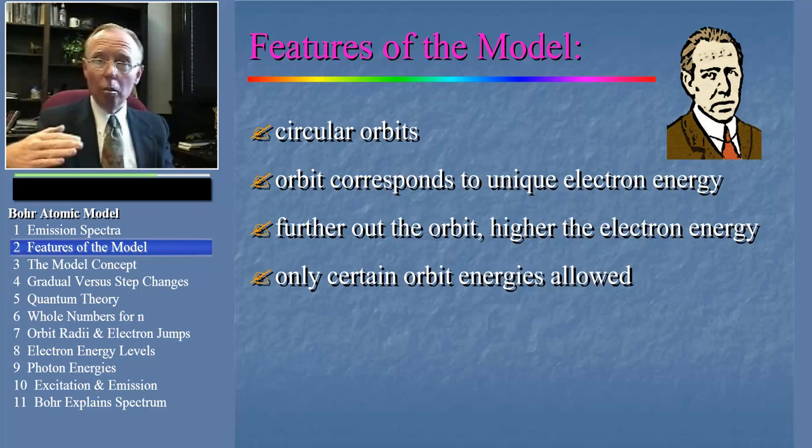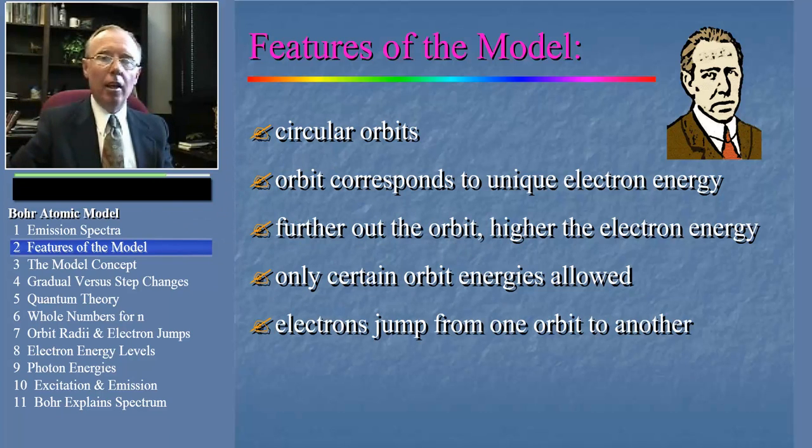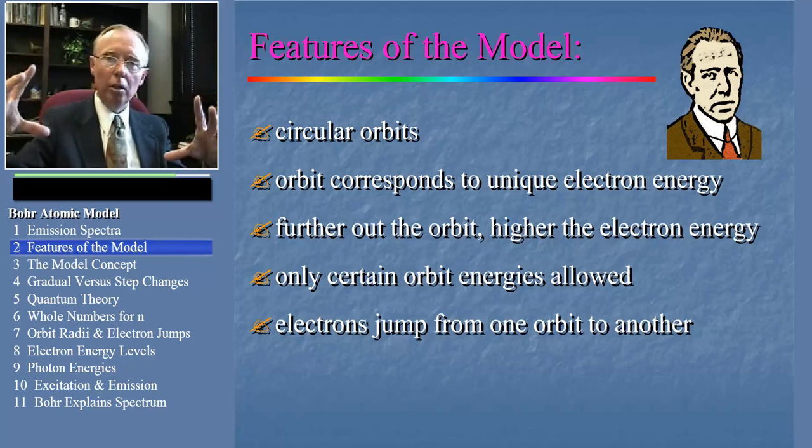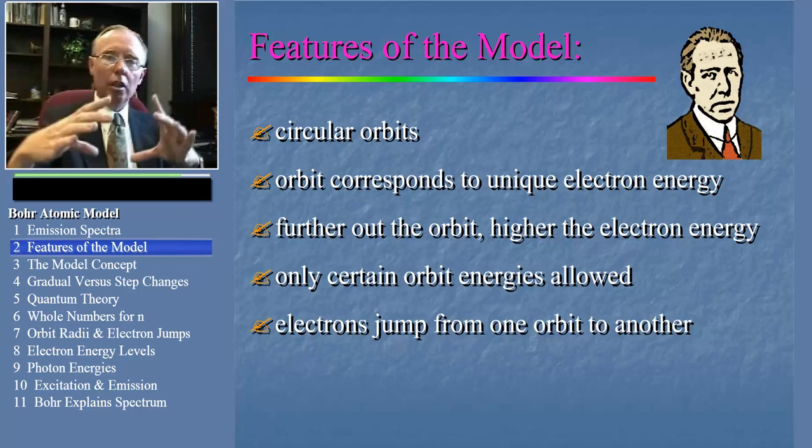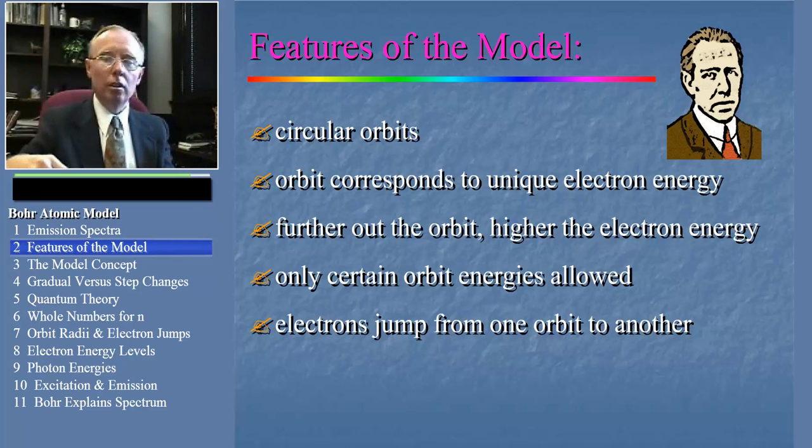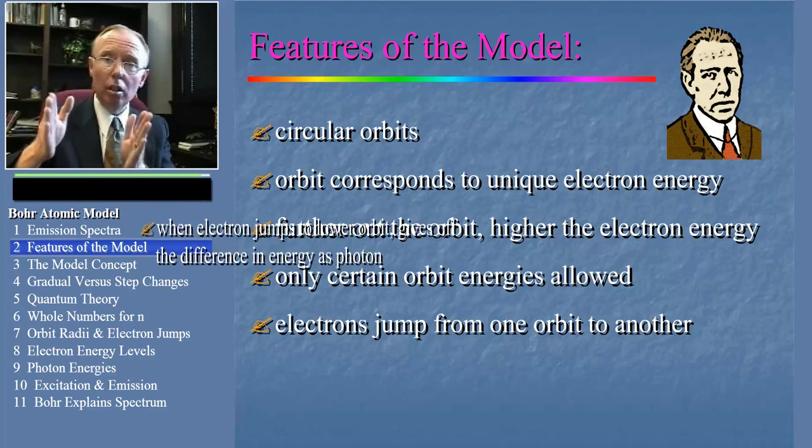Electrons are free to jump from one orbit to another. And in fact, if an electron jumps from an outer orbit of higher energy to an inner orbit of lower energy, then it releases a photon of exactly the same energy as the difference in energy between those two orbits.